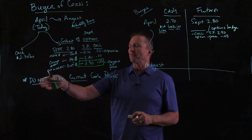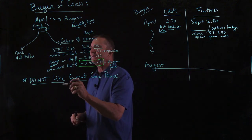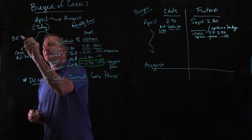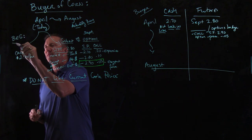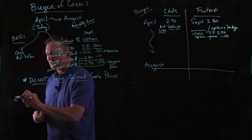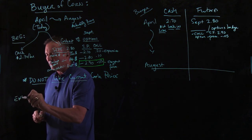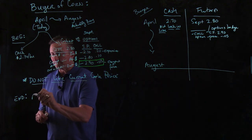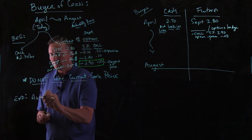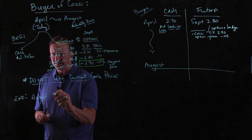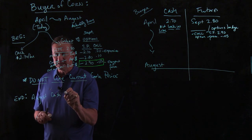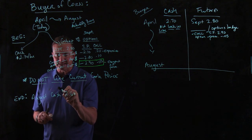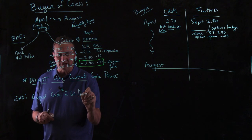All right, let's move through. You're always going to have a beginning situation and then you're always looking for the ending situation. So here's what happened in August. In August, the cash price became $2.60 a bushel in Amarillo.